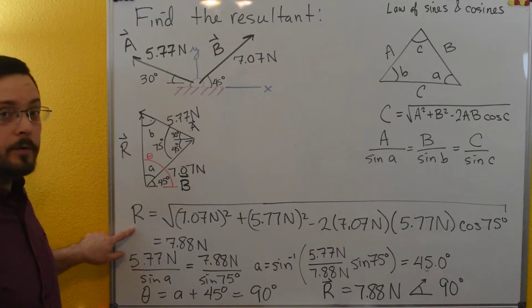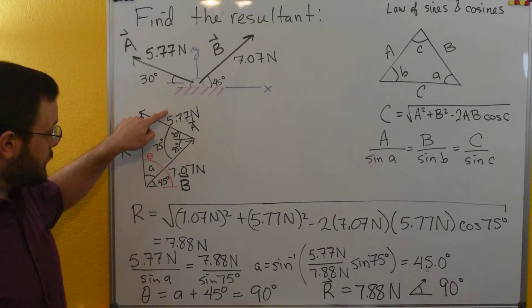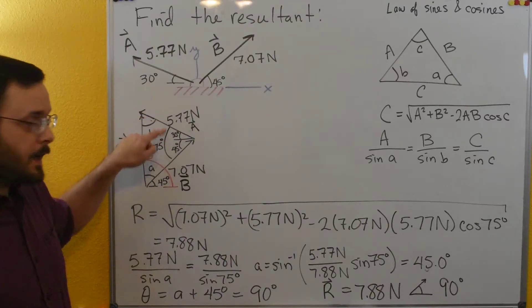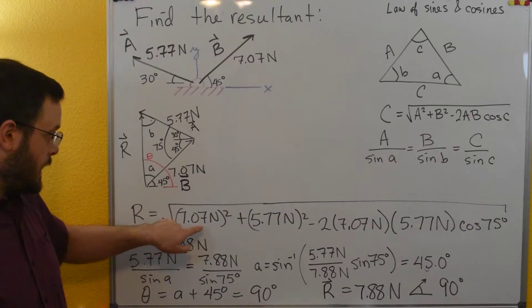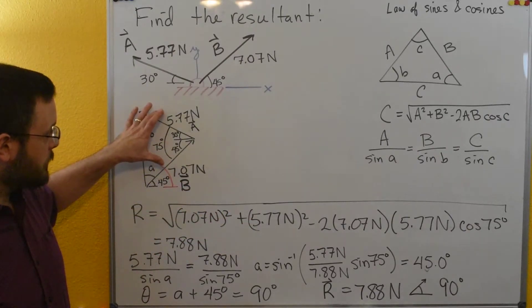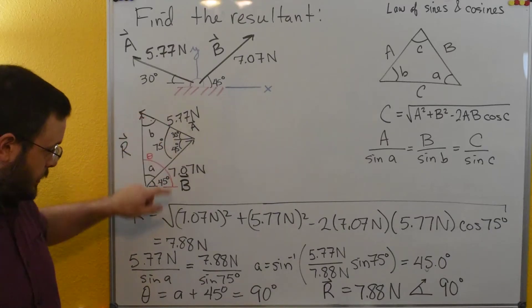So now I can calculate r because I know these two links of these two sides and I know the angle between the two sides. So my a and b terms now are the 5.77 and the 7.07 here.